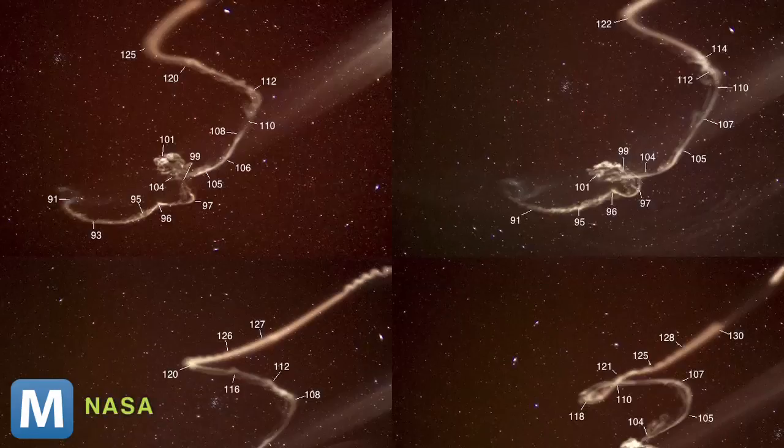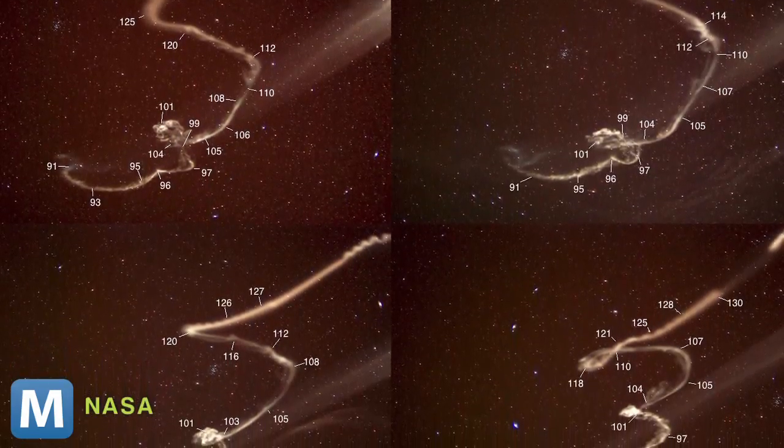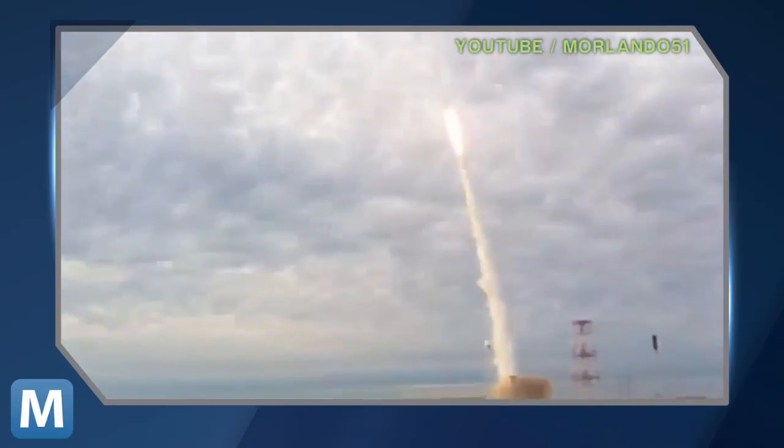So these five rockets will launch on different paths seen here and release a cloud-looking chemical tracer, like these. That way, scientists, as well as those of us living on the East Coast, will be able to temporarily see high-speed winds.